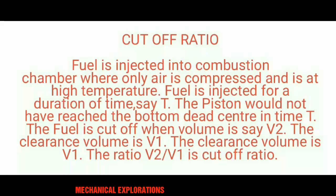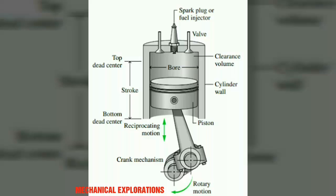Now we see the theoretical explanation in the diagram. You can notice the top dead center, the bottom dead center, and the piston connecting rod with the crank. The clearance volume is the small space just above the top dead center. You can notice that the piston is not coming to the bottom dead center — it stands between the top dead center and bottom dead center. This is due to the cutoff of fuel, termed V2, and the clearance volume above is termed V1. The ratio V2 divided by V1 gives the cutoff ratio.